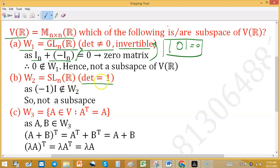So negative I, the determinant of negative I is minus one, and minus one will not go to this W2. So W2 is not a subspace.